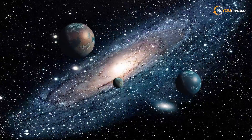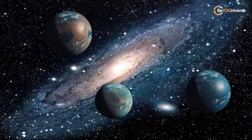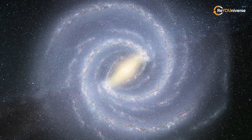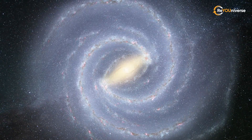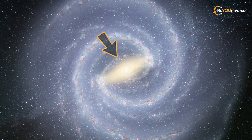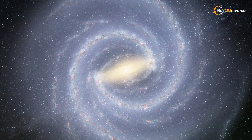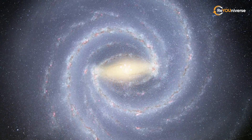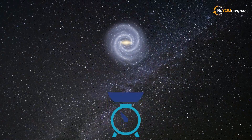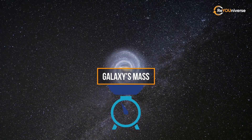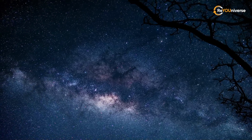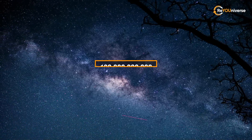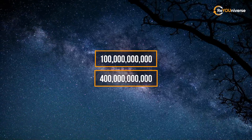To estimate how many planets are in the Milky Way, we first need to know the number of stars. Unfortunately, due to the positioning of the Milky Way galaxy in the shape of a barred spiral disk, astronomers cannot observe all of the stars directly. Instead, they rely on calculations of our galaxy's mass. Based on this, scientists estimate that the Milky Way has between 100 and 400 billion stars.